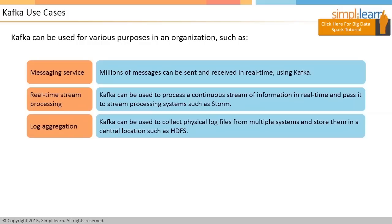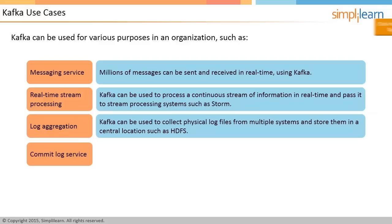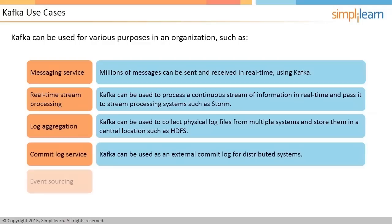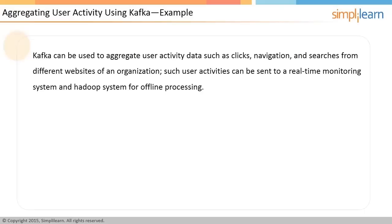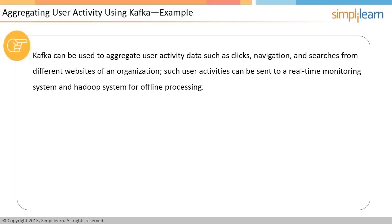Commit log service: Kafka can be used as an external commit log for distributed systems. Event sourcing: a time-ordered sequence of events can be maintained through Kafka. Kafka can also be used to aggregate user activity data such as clicks, navigation, and searches from different websites of an organization.